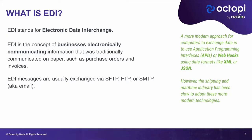EDI stands for Electronic Data Interchange and it is a concept of businesses electronically communicating information that was traditionally communicated on paper, such as purchase orders, invoices, etc. EDI is used in many industries such as the shipping and maritime industry, banking, healthcare, etc. EDI messages are usually exchanged between parties using protocols like SFTP, FTP, or SMTP. SMTP is just a protocol via email, but the most secure way to do EDI is SFTP, and at Octopi we always recommend our partners to use SFTP to exchange EDI messages.